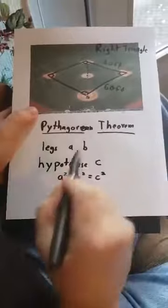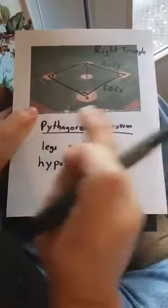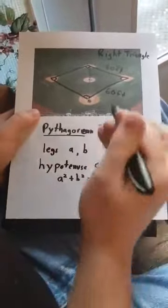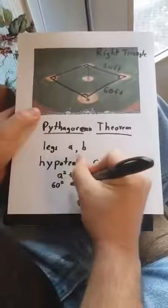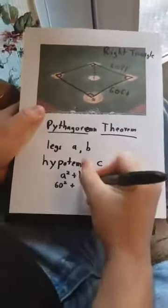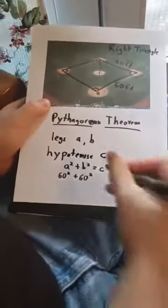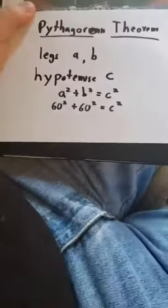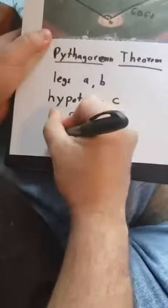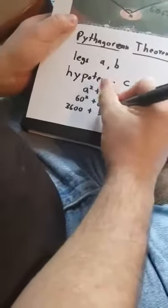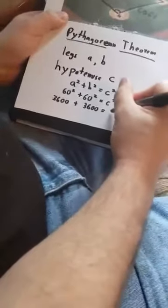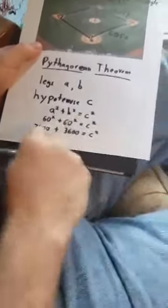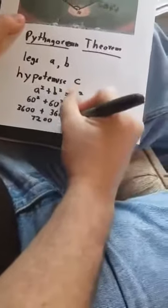We talked about squaring things earlier in the year — in other words, you multiply that number by itself. So let's make the first base leg A, which is 60. They're both 60, so 60 squared plus 60 squared equals C squared. We need to take 60 times 60 to get that first number. The way I like to do this: just ignore the zero — six times six is 36, and in 60 there are two zeros, so add the two zeros. They're both going to be the same thing, so we're left with 3,600 plus 3,600 equals C squared. Add them together — 36 and 36 makes 72, so 7,200 equals C squared.